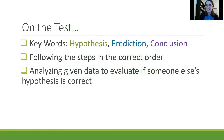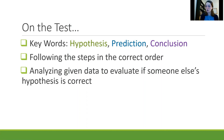On the test you might see keywords like hypothesis, prediction, and conclusion. You also may see problems that have to do with following the steps of this process in the correct order. And you might see things about analyzing given data to evaluate if someone else's hypothesis is correct — you may be given a data set and told what the person's initial hypothesis was, and you have to determine whether that hypothesis holds true or is false.